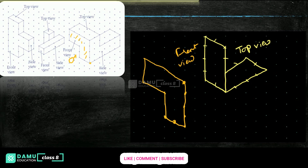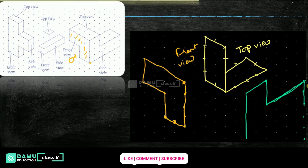Then what is the side view? 1, 2, 3, 4 — this top one 2. Then down 2. Then side will be 4. So here it will be like this. So 1, 2, 3, 4 — and 1, 2, 3, 4 inclined. Then down 2. Then this side will be how much — that much. So this is the side view. These are all the views of the given figures.